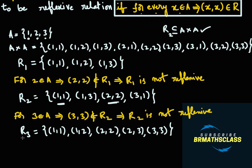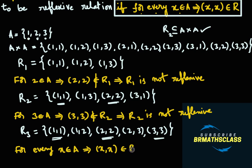Now the question is: is this relation a reflexive relation? For every x belonging to set A, ordered pair (x, x) must be in the relation. You see here — 1 is in set A and ordered pair (1,1) is in this relation. 2 is in set A and ordered pair (2,2) is in this relation. You take element 3 in set A — ordered pair (3,3) is in this relation. For every element in set A, ordered pair (x, x) is there in this relation. That is why we say this relation is reflexive. We write: for every x belonging to set A, ordered pair (x, x) is in R3.